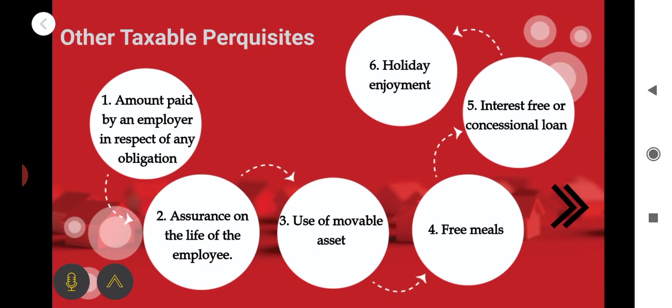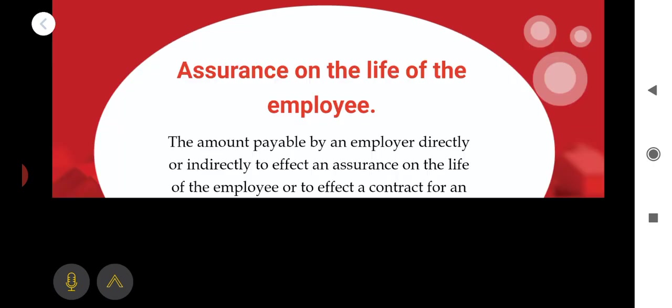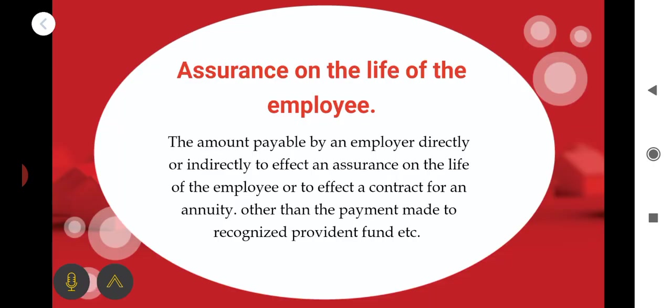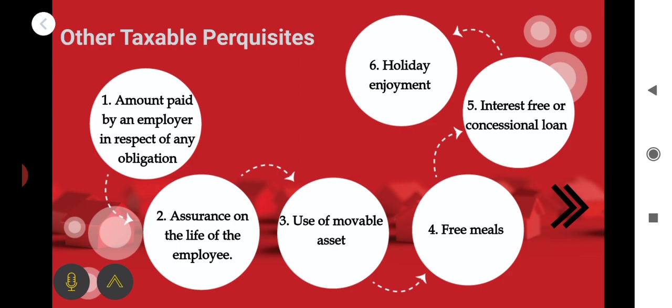The next one is assurance on the life of the employee. The amount payable by an employer directly or indirectly to effect an assurance on the life of the employee, or to effect a contract for an annuity — other than payments made to a recognized provident fund — is a taxable perquisite.